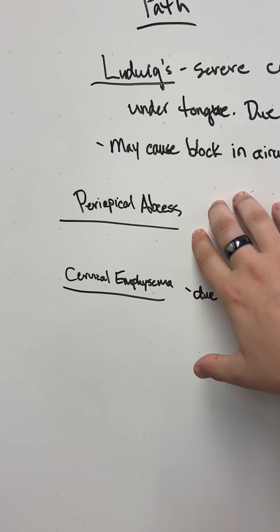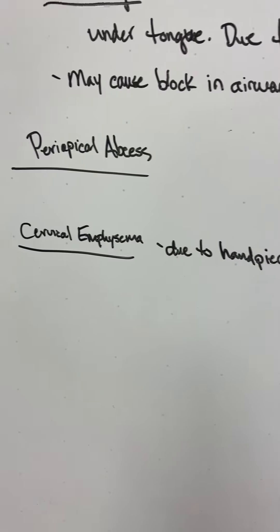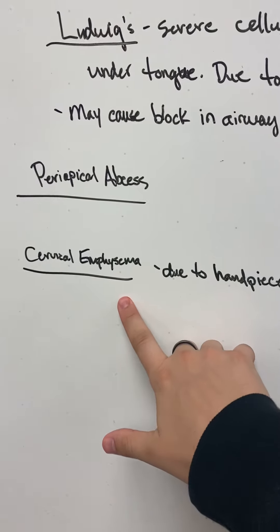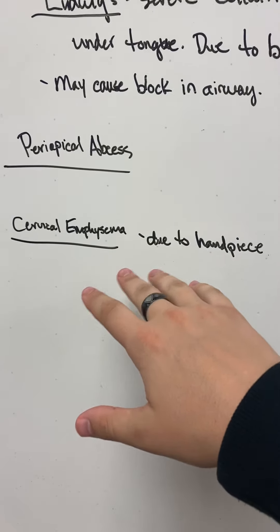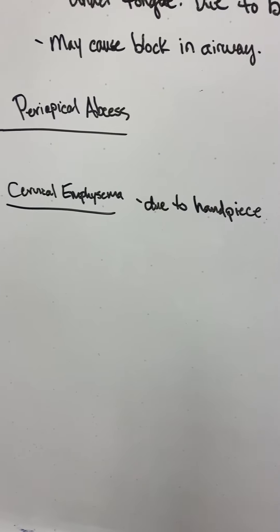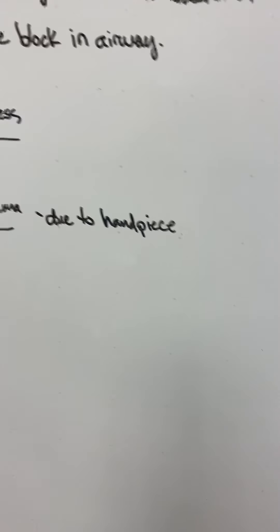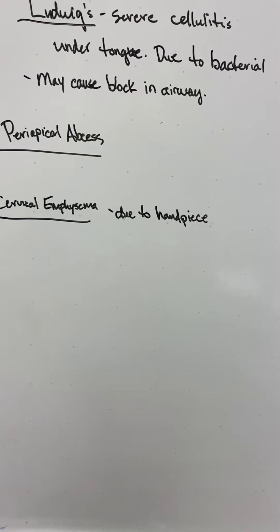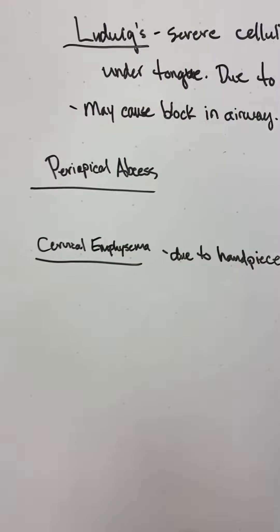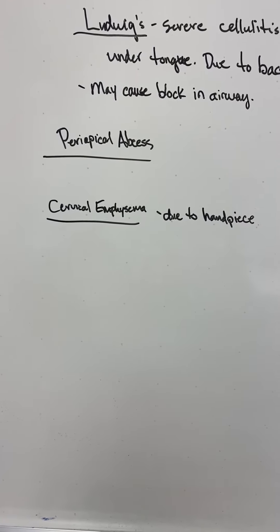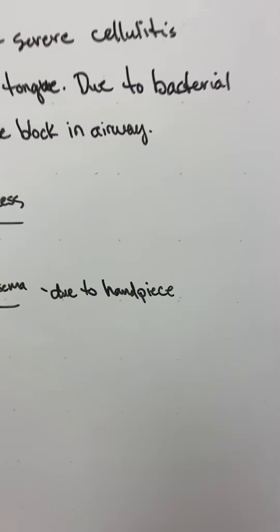We have a periapical abscess, that's just an abscess around the apex of the tooth, and that can shift into those spaces. And then we have cervical emphysema. This is only clinically relevant to us because it can be due to our handpieces. We can shoot some gas from our handpieces into these spaces, and it can obstruct the airway. That gas can travel down. Normally, it just diffuses throughout your body, so normally it's not that harmful, but it can be.